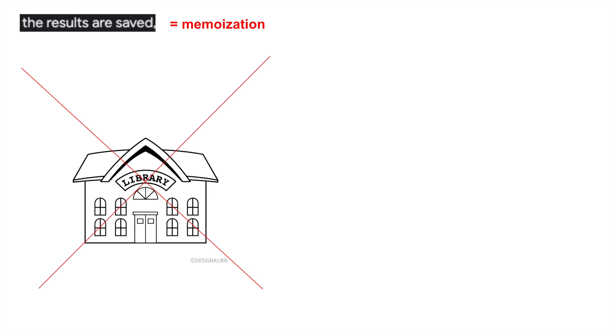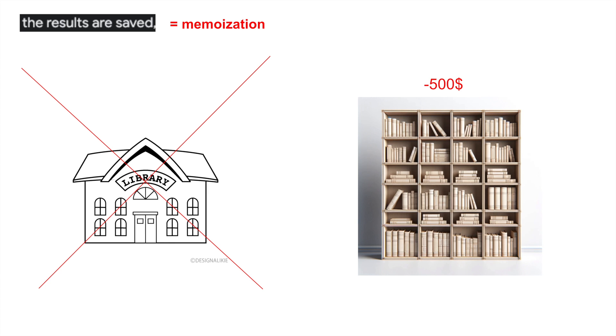Saving results in comp sci is called memoization and it is really easy. All it means is to take some computation and store it so we don't have to make that computation again. Instead of going to the library every time to read books, we spend 500 bucks on a bookshelf and go to the library once and keep a bunch of books with us at home.